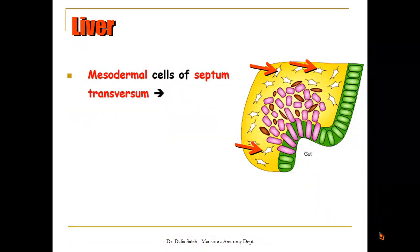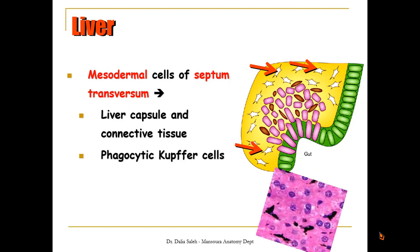The liver bud invades inside the septum transversum, which is mesodermal in origin, and which also shares in some of the components of the liver. The mesodermal cells of the septum transversum will give us the liver capsule and the connective tissue content of the liver. They will also give us the phagocytic cells inside the liver, which are called Kupffer cells.